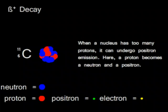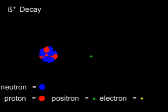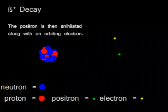When an isotope has too many protons, it undergoes beta plus decay. A proton turns into a neutron and a positron, which is an antimatter electron. The positron and the electron cancel each other out.